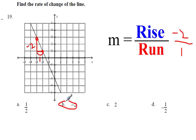You cannot pick A, you cannot pick C, because these are positive slopes. This line goes down from left to right—that is a negative slope. B is your answer.